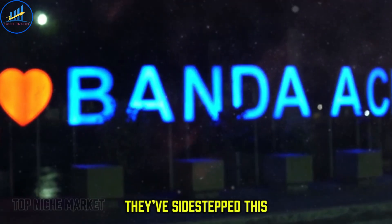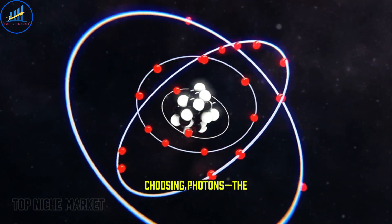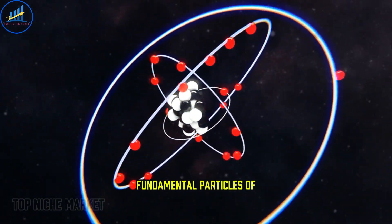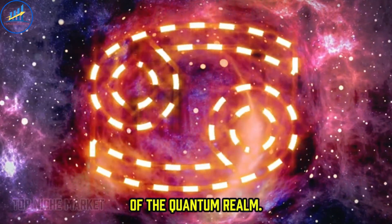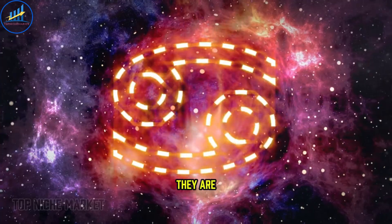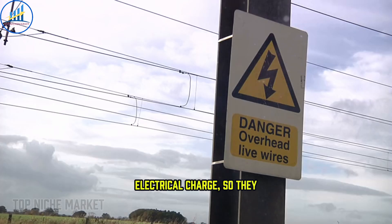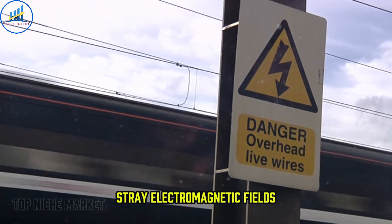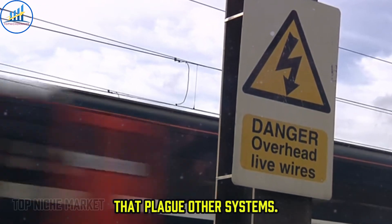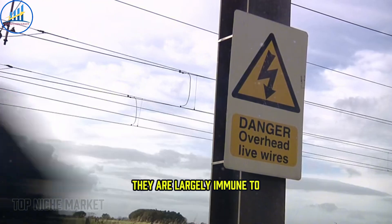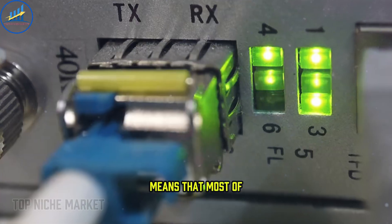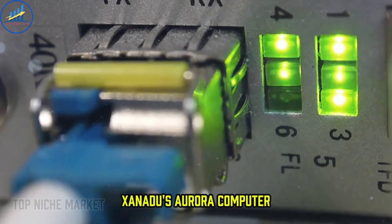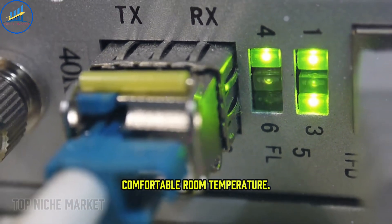They sidestep this entire problem by choosing photons, the fundamental particles of light, as their qubits. Photons are the Zen masters of the quantum realm. They are incredibly resilient. They don't have an electrical charge, so they barely interact with the stray electromagnetic fields that plague other systems. They are largely immune to heat and vibrations.